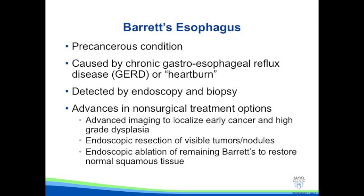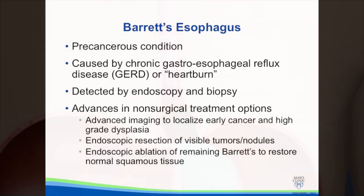When high-grade dysplasia or early cancer is found, there are new options for non-surgical treatment, which include advanced imaging to localize early cancer and high-grade dysplasia, endoscopic resection of visible tumors and nodules, and endoscopic ablation of the remaining Barrett's to restore the normal lining of the esophagus.